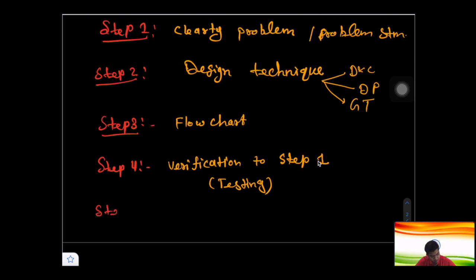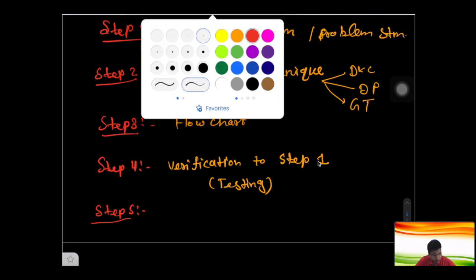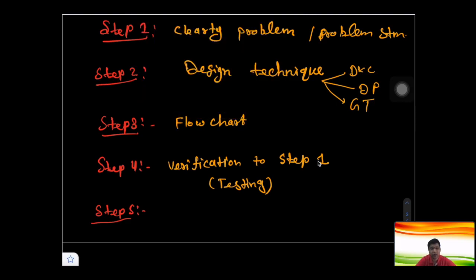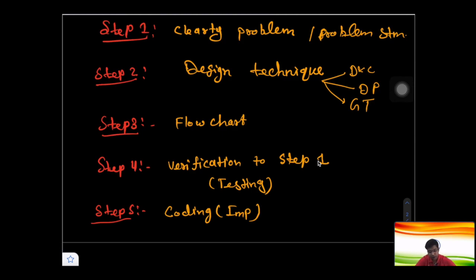After verification, Step 5 is implementation — the coding stage. Once you have verified your design pattern and flowchart and confirmed everything is going well, you move on to writing the actual code.